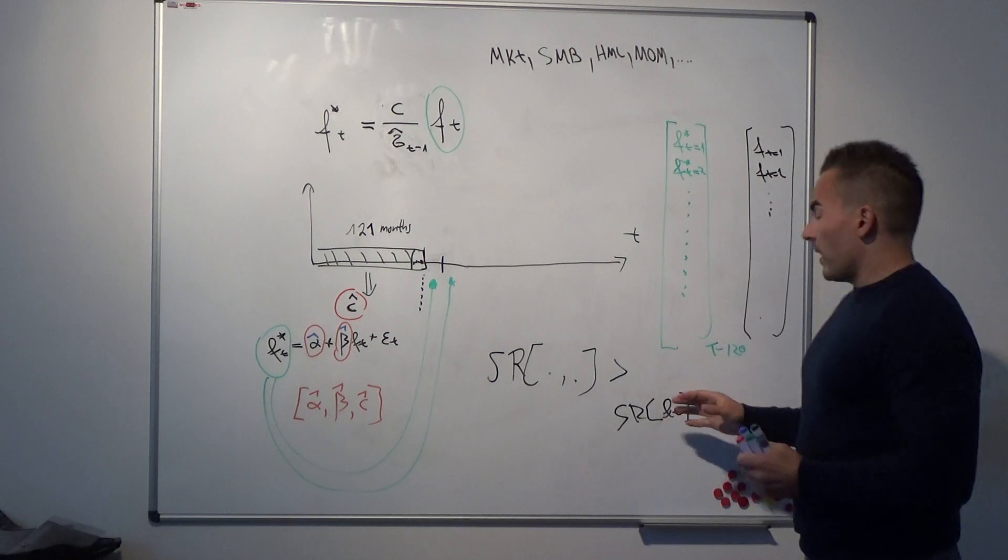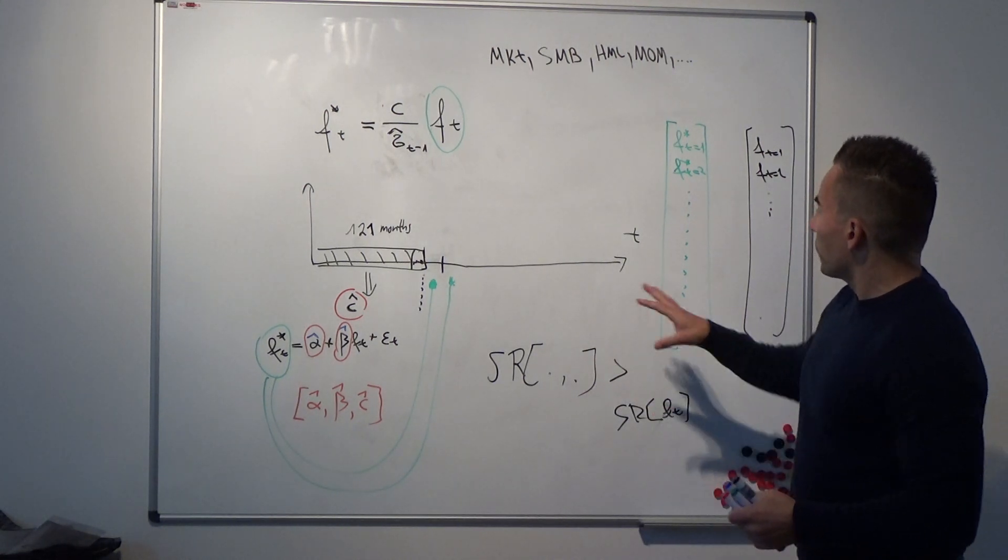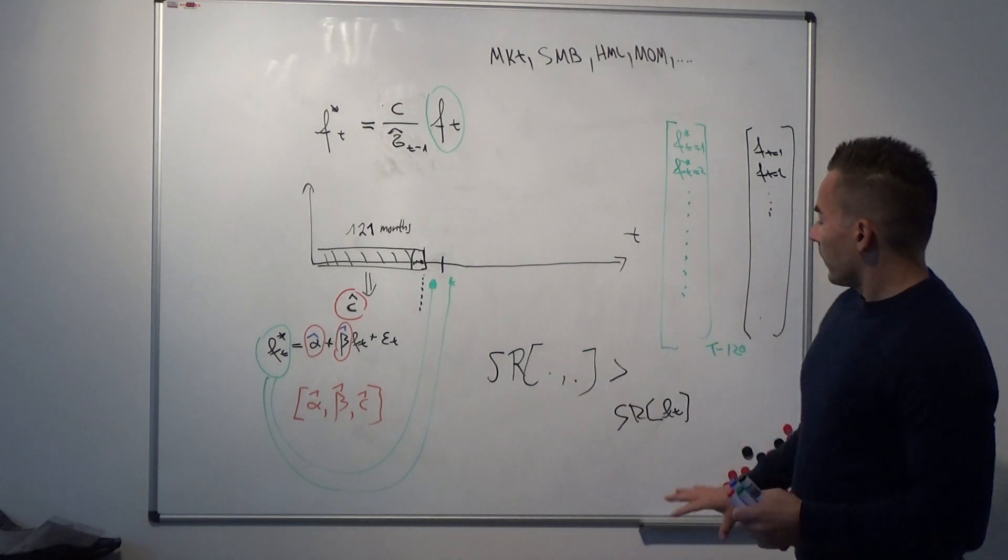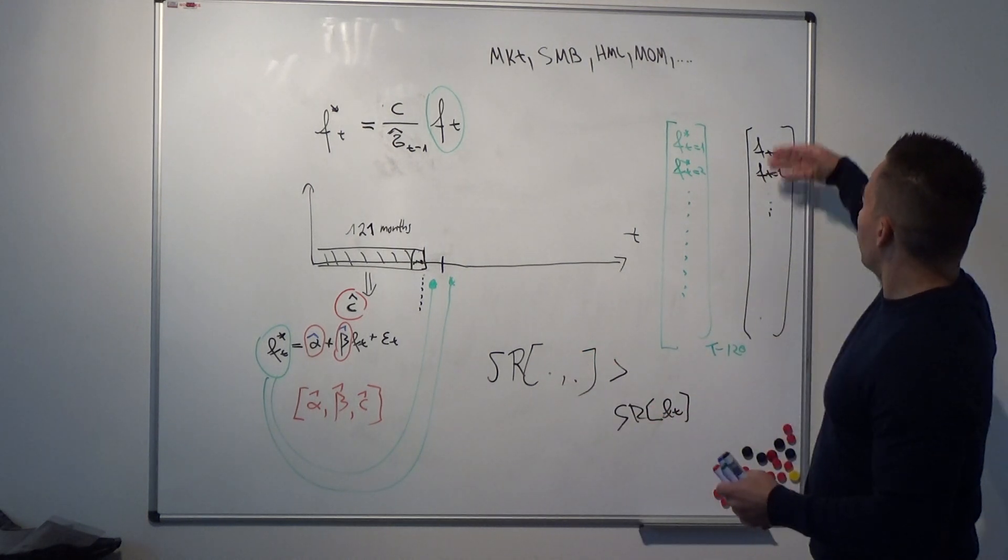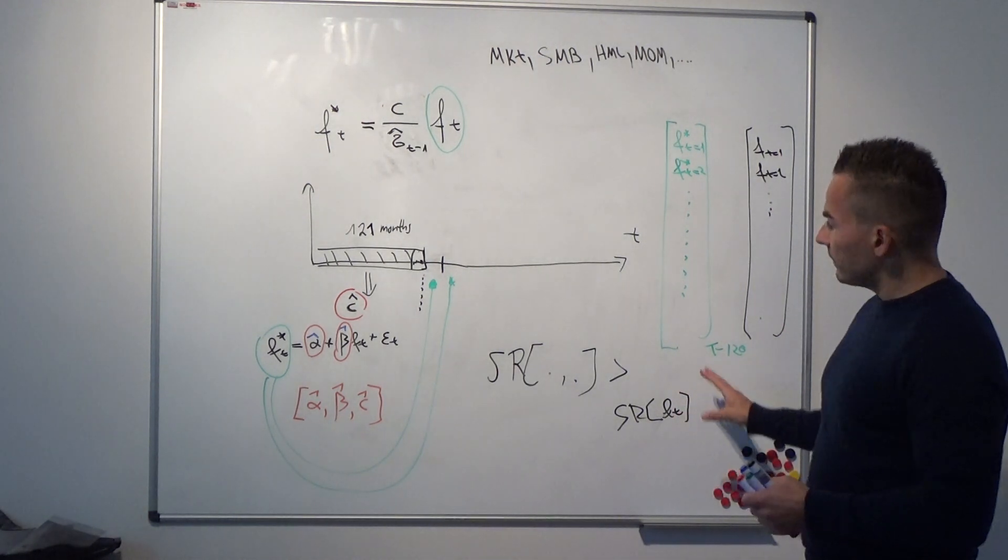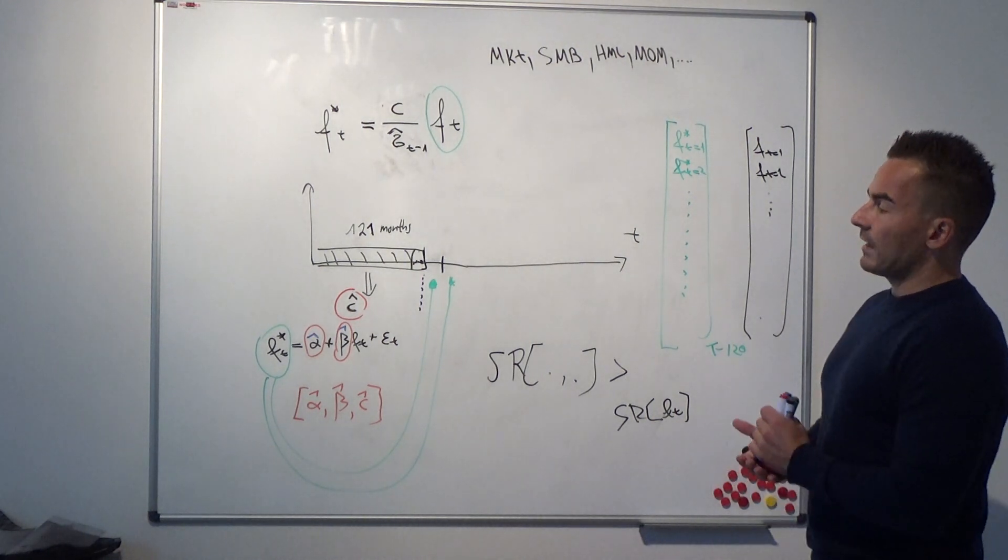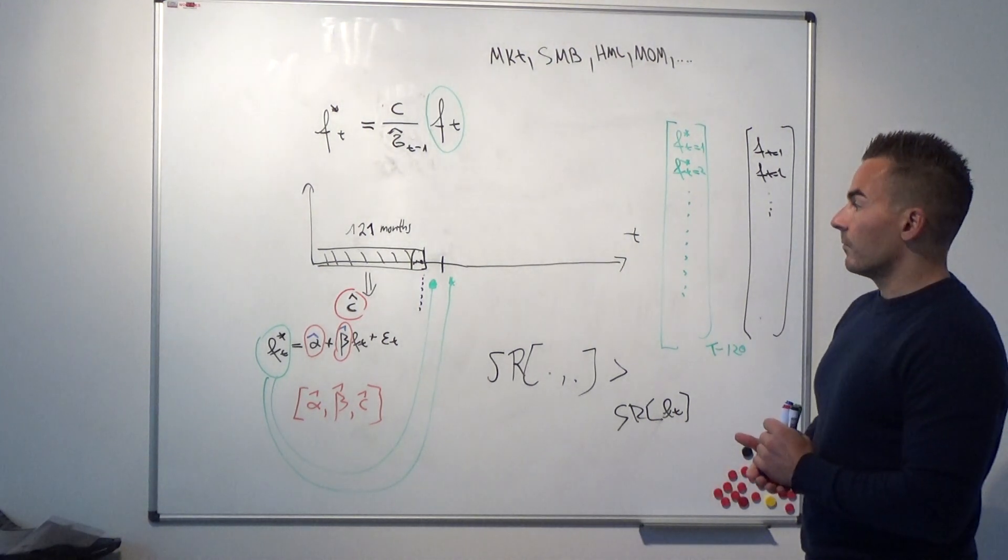And now we have to compare, we have to check if these two Sharpe ratios here, or if this Sharpe ratio here, is larger than the Sharpe ratio of using just this standard factor. So that's basically the out-of-sample test. That's basically one of the out-of-sample tests that they discuss in their paper.